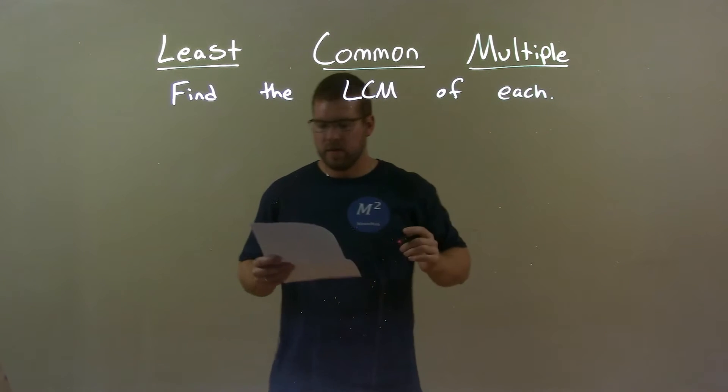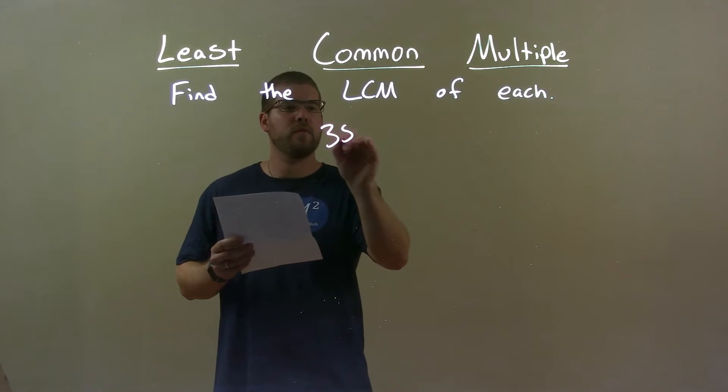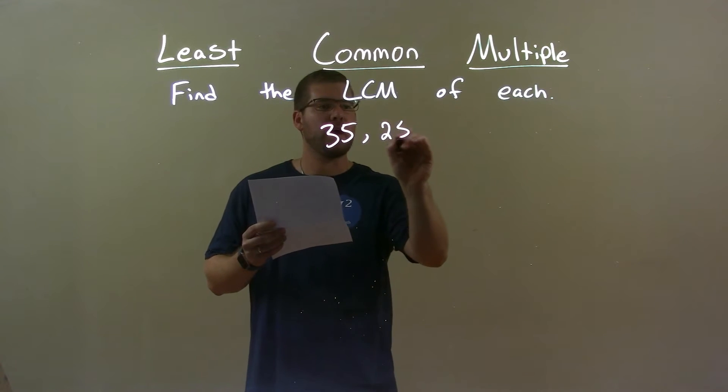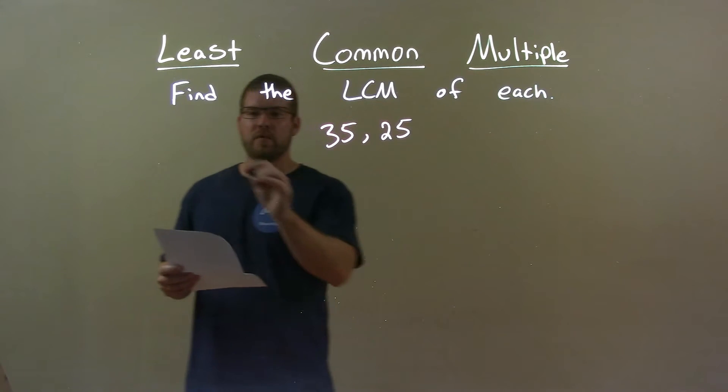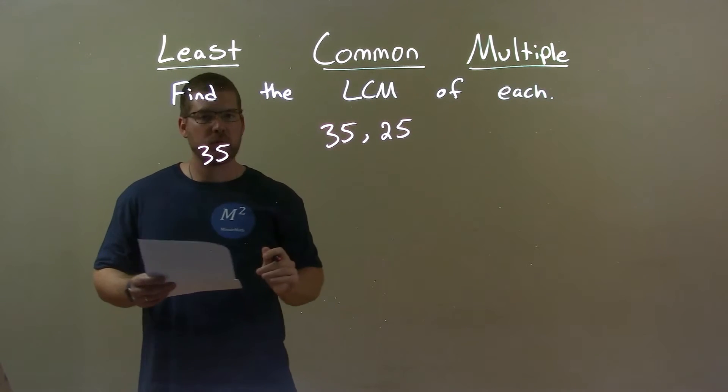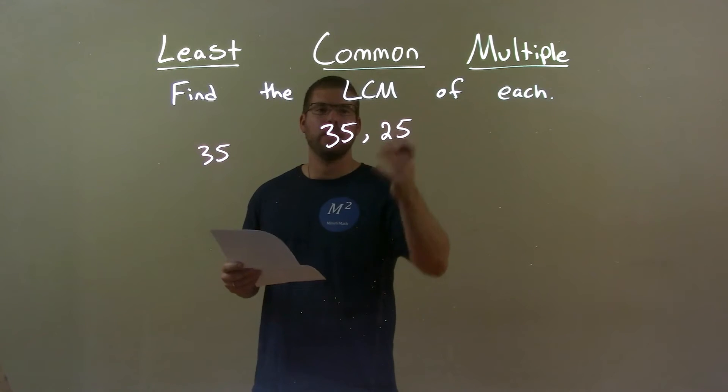So, if I was given these numbers, 35 and 25, I take the larger of the two numbers, 35, and I go through its multiples, and I find which one is also divisible by 25.